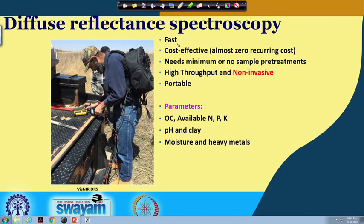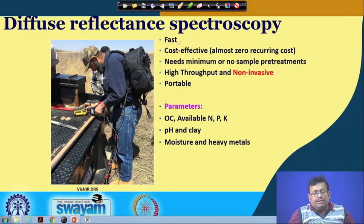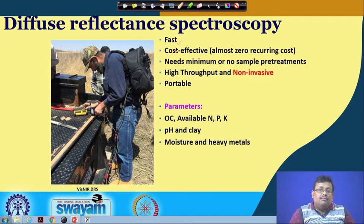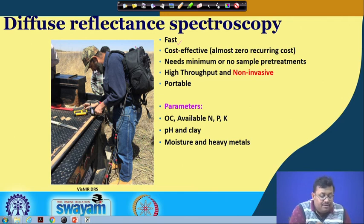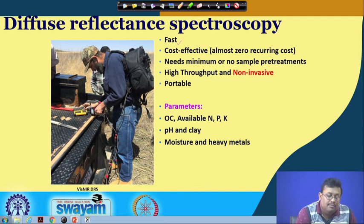What are the advantages of this technique? First, it is very fast — you can literally take a scan of a soil sample in only 5 to 10 seconds. This is the diffuse reflectance spectrometer — you can carry it in a backpack with a handheld probe and take readings at any desired points of the soil.